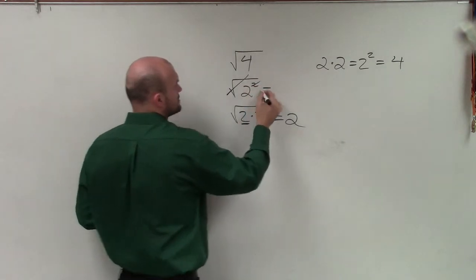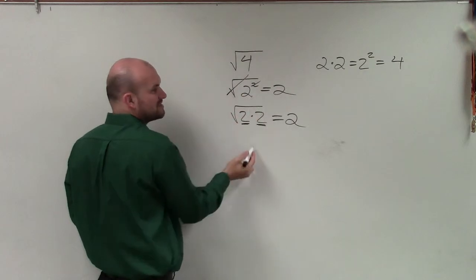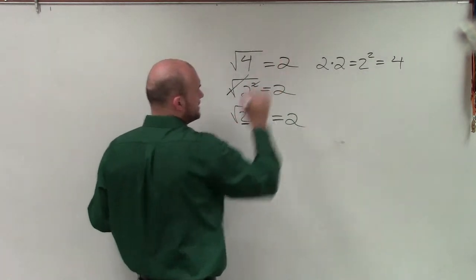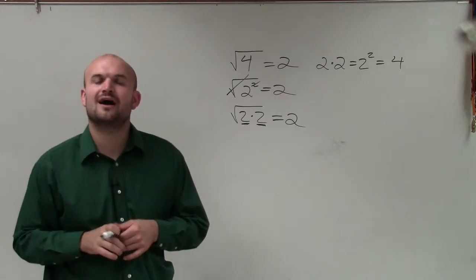These are inverse operations, which gives us 2. Therefore, the square root of 4 is equal to 2. So there you go, ladies and gentlemen. That is how you take the square root of a number. Thanks.